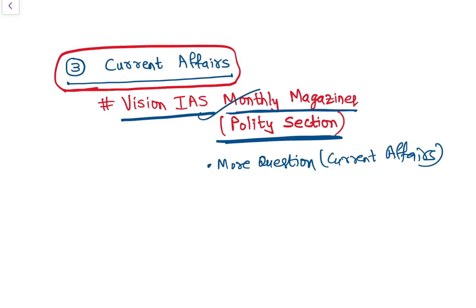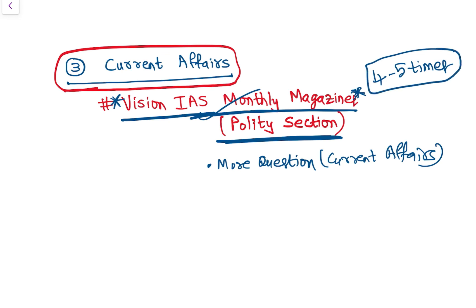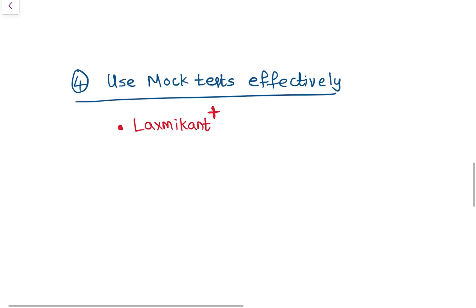If you are referring to other magazines like Insights or Sunya IAS, that is fine too — but whatever magazine you use, you need to revise it four to five times before prelims. Reading current affairs just once or twice won't help you remember it. So keep to one source and revise it regularly. That is my only suggestion for current affairs.